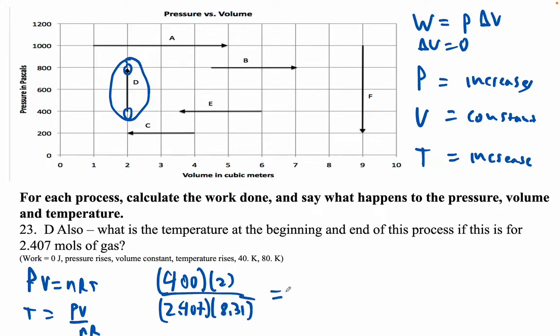That temperature is a chilly temperature. 400 is an exceedingly small pressure times 2 divided by 2.407 divided by 8.31, and I get 39.99, so 40 is the number we're supposed to get.